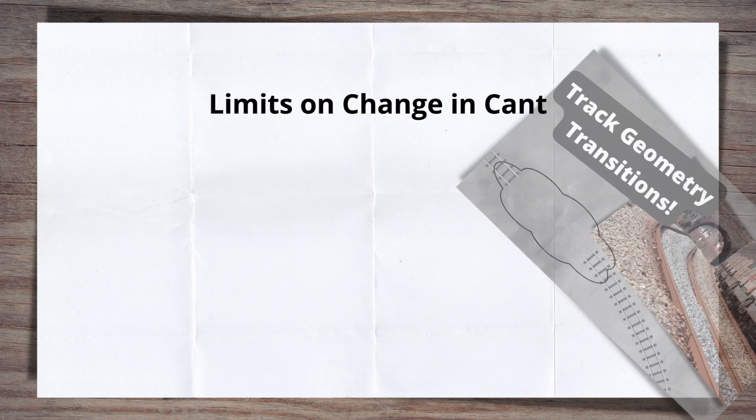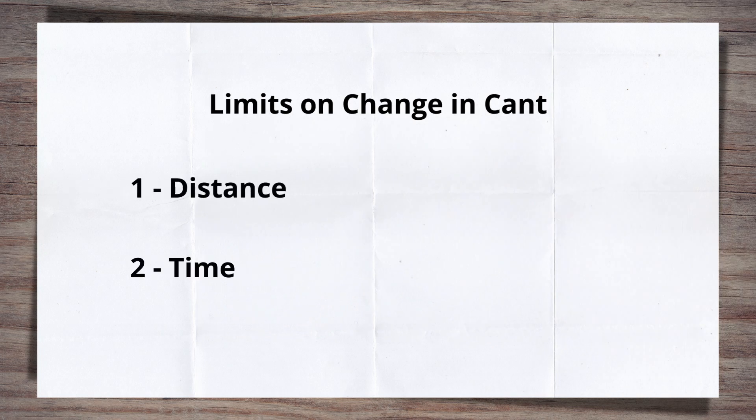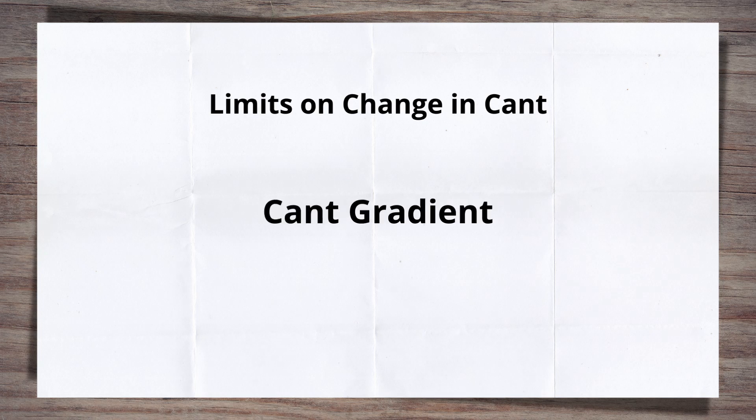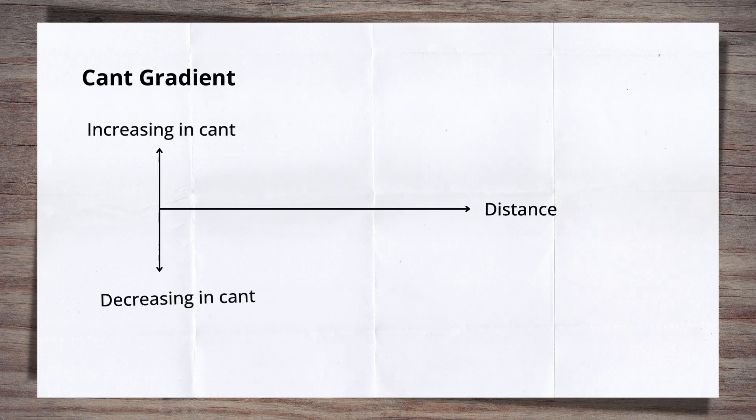For this video we're going to focus on distance, as it's more related to safety. This is known as cant gradient. As we've already said, cant gradient is related to distance. It is the increase or decrease of cant per unit of distance along the track.